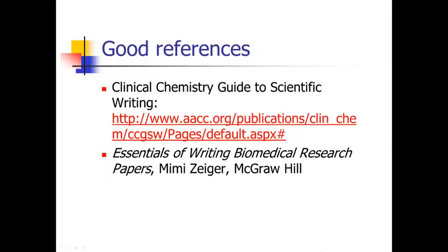I wanted to give you a couple of good references if you want to do further reading about the format of an original manuscript. There's a great series of articles published by Clinical Chemistry — even if you're not a chemist, they're pretty generally written and apply to most scientific disciplines, covering how to write an abstract, an introduction, and so on. If you're in the biomedical sciences, there's also a really nice textbook by Mimi Zeiger on the essentials of writing biomedical research papers, which goes through each section of an original manuscript in much more detail than I will in these lectures.